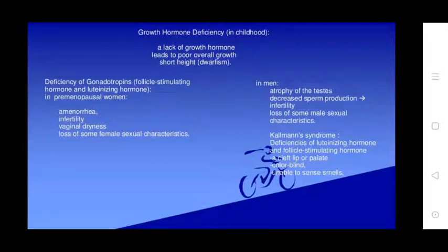Kallmann's syndrome involves deficiency of LH and FSH, associated with cleft lip and palate, color blindness, and inability to sense smell (anosmia).